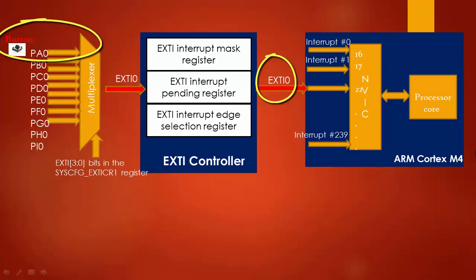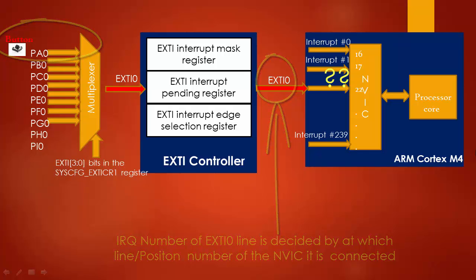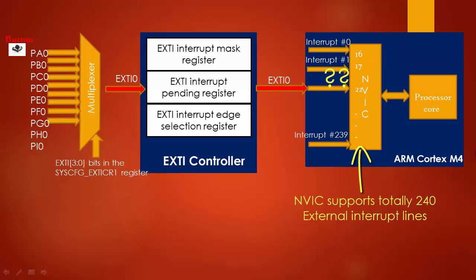The IRQ number for this line is decided by which line of the NVIC, or the interrupt controller, it is connected to, and this is decided by the MCU vendors. The NVIC of the ARM Cortex-M4 processor has a total of 240 lines for external interrupts.